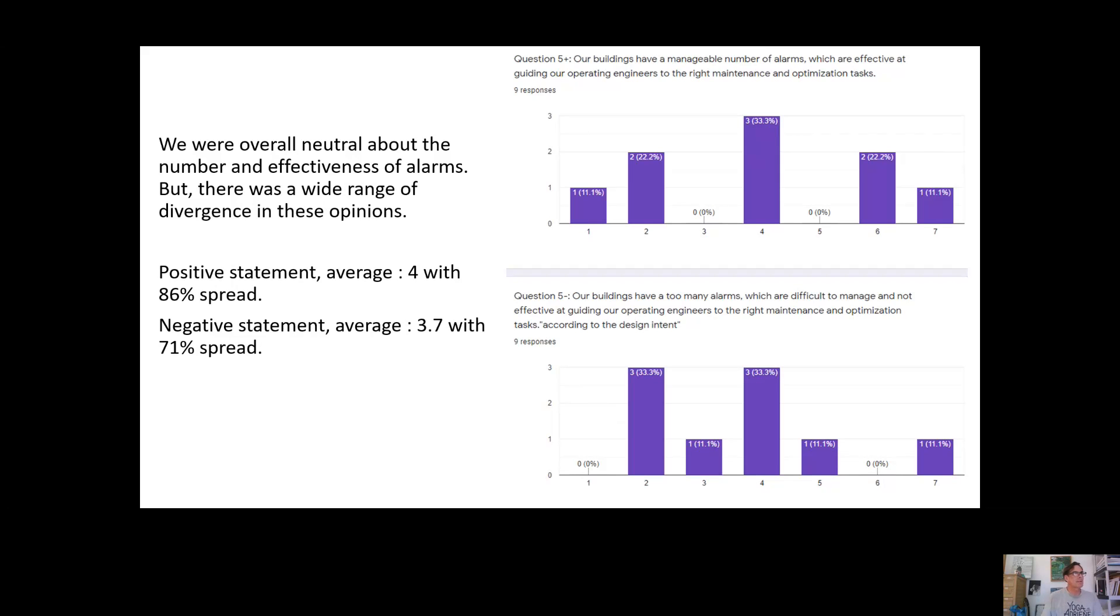This is a very similar story here on the next question. Next question was, our buildings have a manageable number of alarms which are effective at guiding our operating engineers to the right maintenance and optimizations task. The negative version of that was, our buildings have too many alarms which are difficult to manage and not effective at guiding our operating engineers to the right maintenance and optimizations tasks according to the design intent. Again, in both of these cases, we have this neutrality thing with this wide spread. You can see question number one there, there's a spread all the way across the curve. So these are statements that, the positive statement here, we have a manageable number of alarms that are effective at guiding our operating engineers to the right maintenance and optimizations task, this should be the state of affairs. We should all agree with this. So there's opportunity for growth.